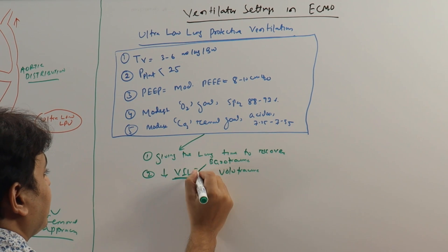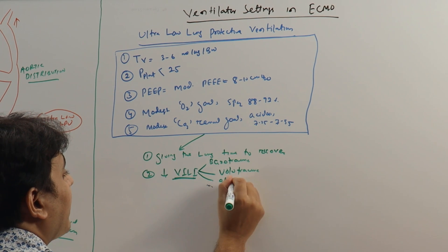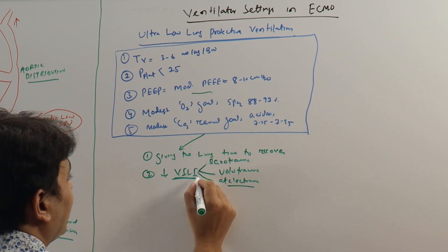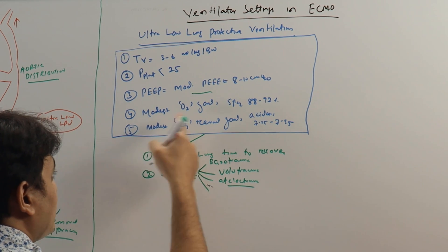Because we are able to give a very low tidal volume or pressure, atelectrauma is prevented because you are using a PEEP.